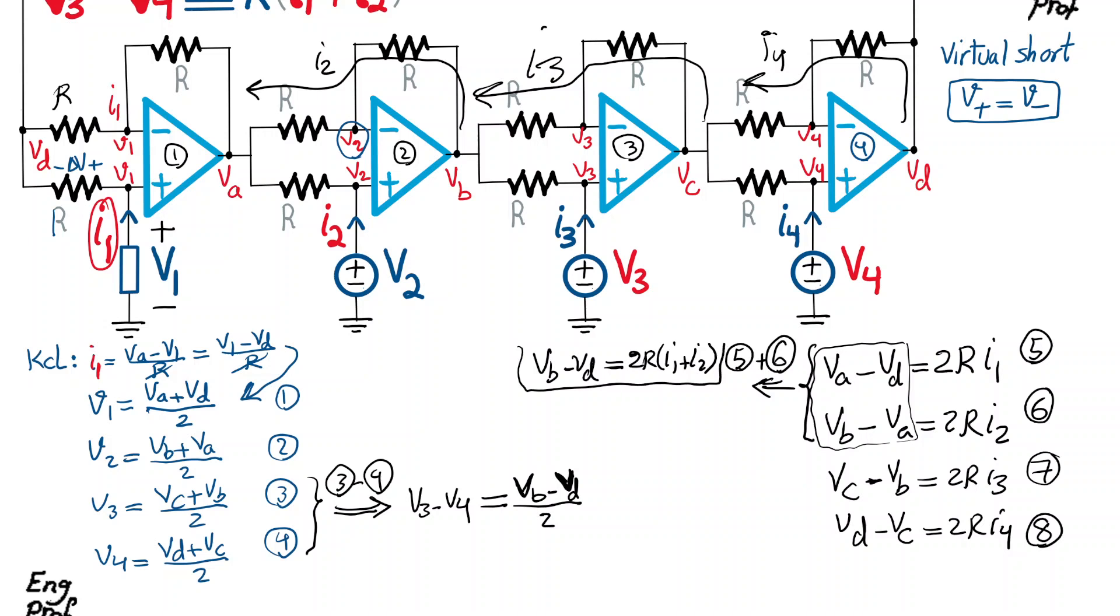So if I do that, add them together, and I can get VB minus VD equal to two R times I1 plus I2. So now, if I refer to this as equation 9, I can use equation 9 to substitute for numerator of this equation I have here, VB minus VD. So two R times I1 plus I2 divided by two, two cancel out. And then as a result, I get V3 minus V4, the left hand side, equal to R times I1 plus I2.